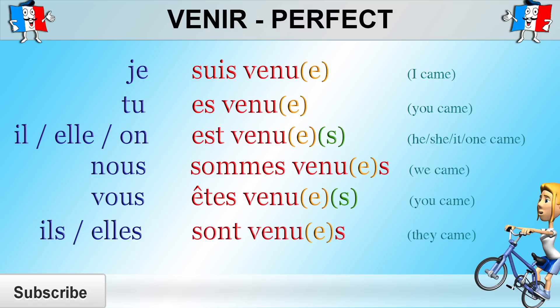Ils sont venus. Elles sont venus. So let's read that again quickly. Je suis venu. Tu es venu. Il est venu. Elle est venu. On est venu. Nous sommes venus. Vous êtes venu. Ils sont venus. Elles sont venus.